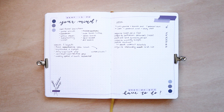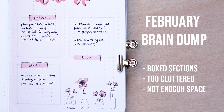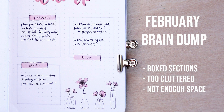Nowadays, I just keep the brain dump pages really simple with only doodles around the page and a title normally at the bottom. This was my brain dump page for February — I divided a page into three sections and I just felt like it was too much. Nowadays, I just prefer to have two pages instead of one and I don't physically divide the pages into sections, only if I have to. But normally, I just keep them pretty simple and I don't divide them in any way.